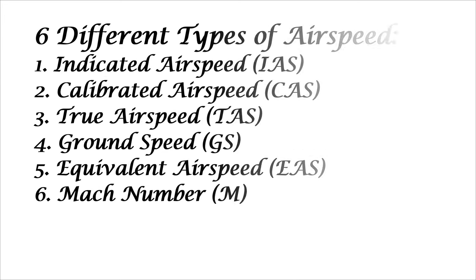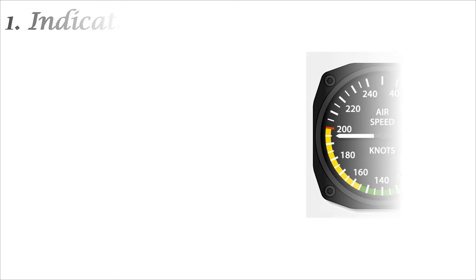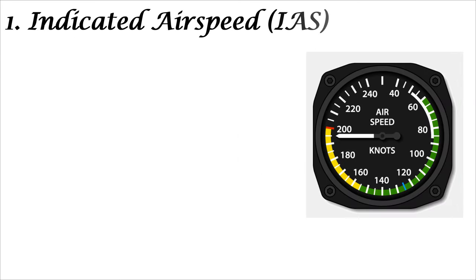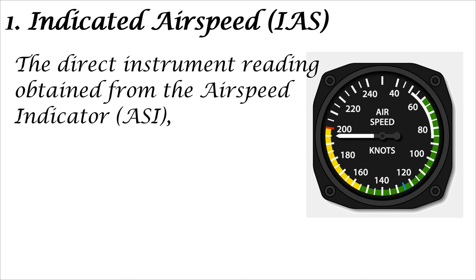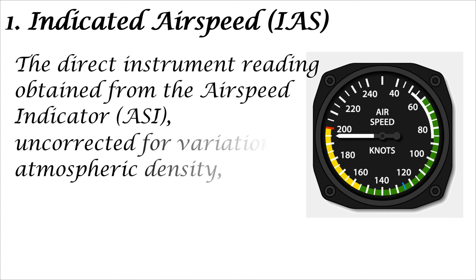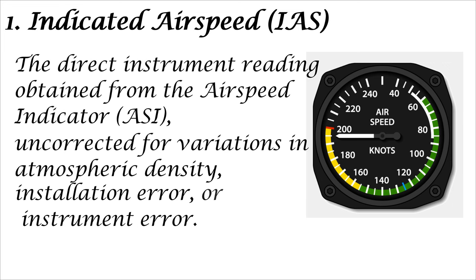Six different types of airspeed. One: Indicated Air Speed, IAS — the direct instrument reading obtained from the Air Speed Indicator, ASI, uncorrected for variations in atmospheric density, installation error, or instrument error.